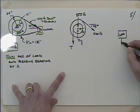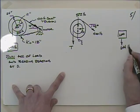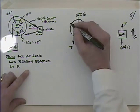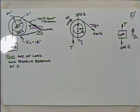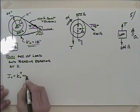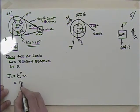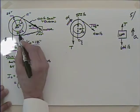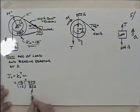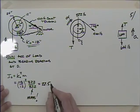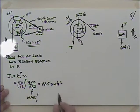Start with free body diagrams. For the drum/pulley: bearing reactions OX and OY, weight 322 lbs, the 400-lb belt tension at 45°, and the cable tension T (not 644 lbs, since the load is accelerating). For the load: 644 lbs down and T up, with upward acceleration. I about O equals K² times mass: (18/12)² times (322/32.2) = 22.5 slug·ft².